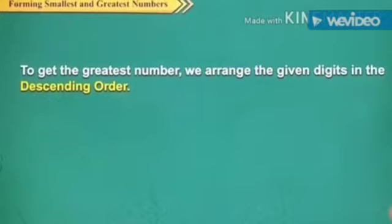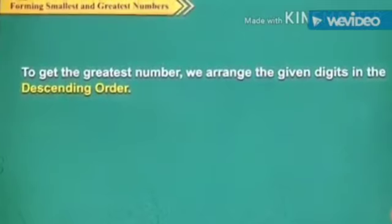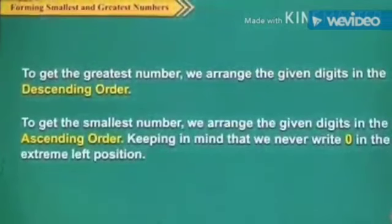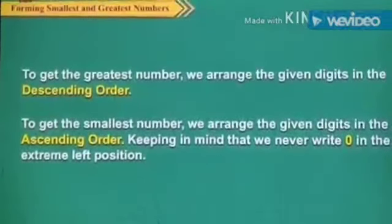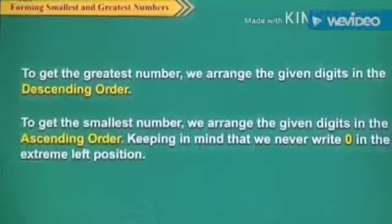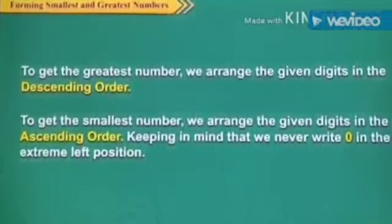Smallest and greatest number. To get the greatest number, we arrange the given digits in descending order, keeping in mind that we never write zero in the extreme left position.